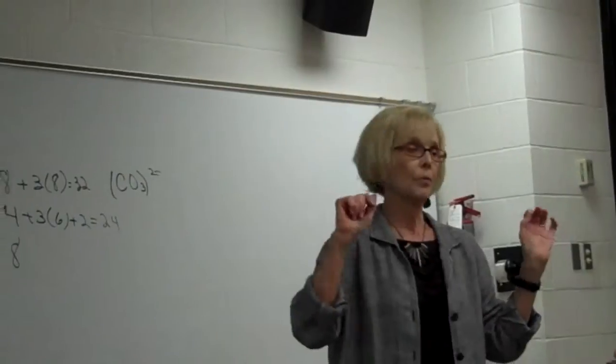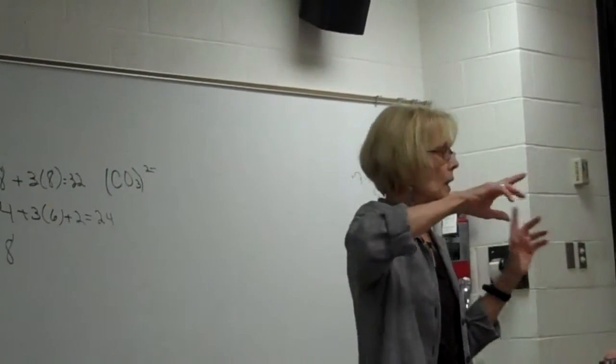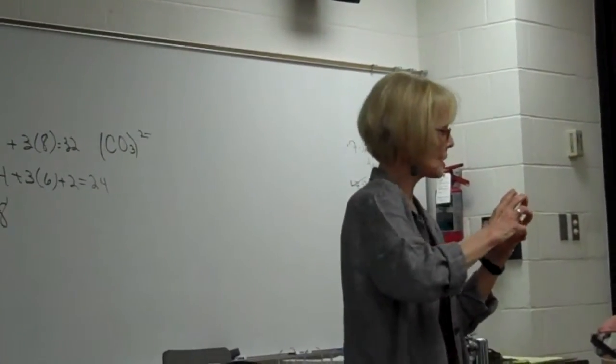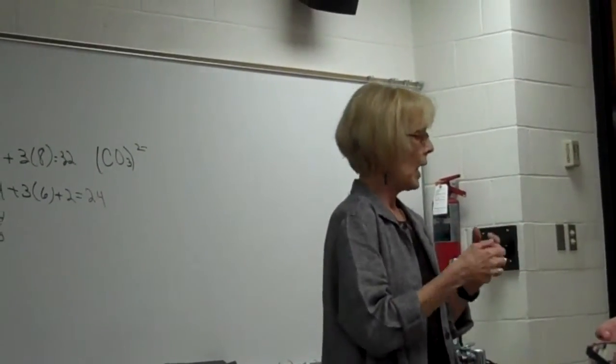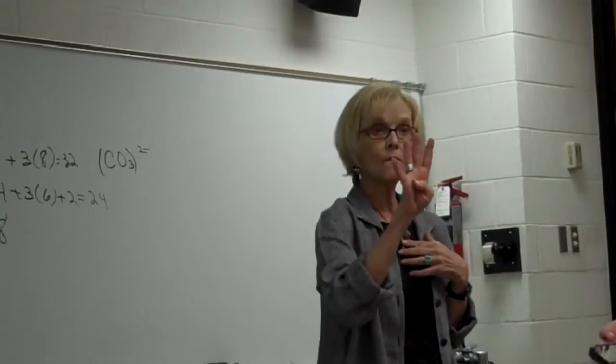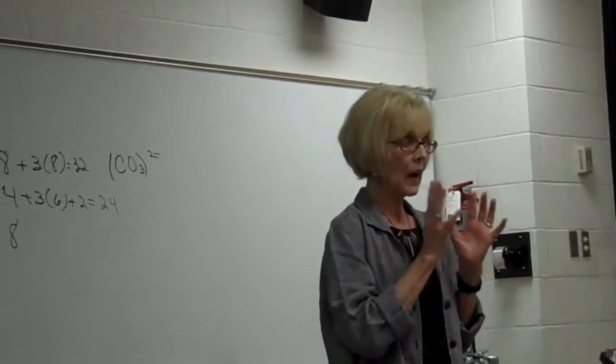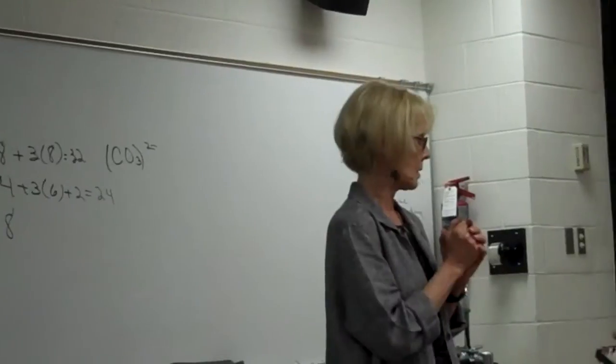So here, for beryllium chloride, if you make it under the right conditions, it will have some covalent character. And if it does, it needs four on beryllium. It violates the octet rule, and that's an always, always for us.